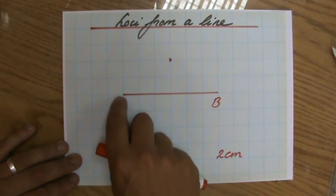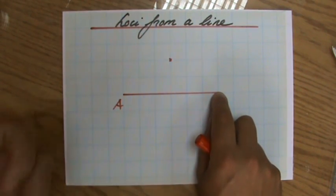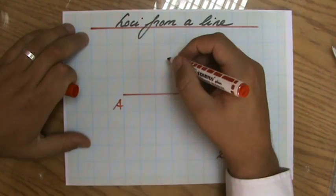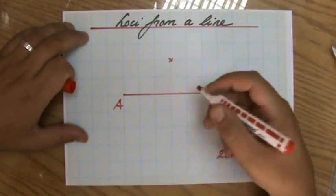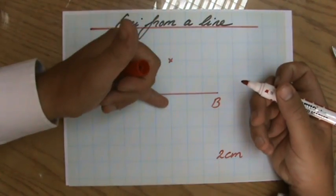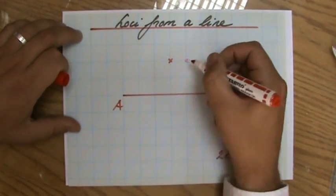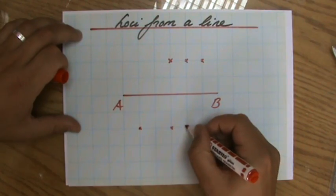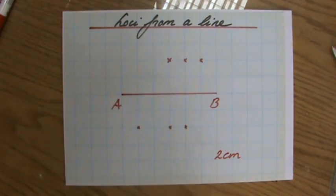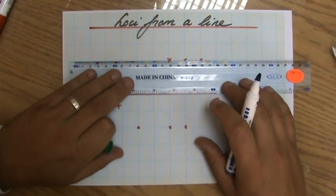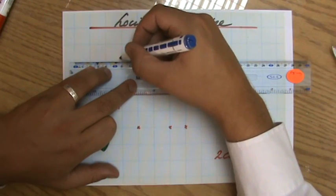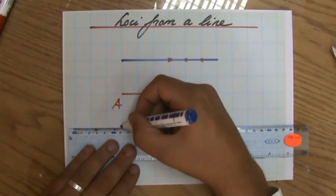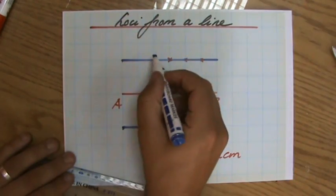Now, the loci from a line. I have drawn line AB, and I'm interested in all the points exactly two centimeters away from line AB. One block is one centimeter. Here is one point two centimeters away, and here is another, and another. Also over here, there are points exactly two centimeters away from AB. So the loci of points from a line is a parallel line, because all the points on these parallel lines are exactly two centimeters away from AB. They are parallel.